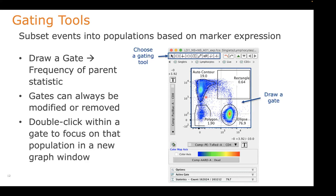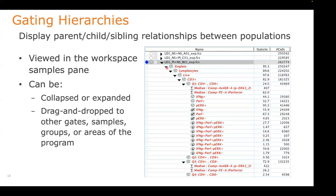Once you've drawn a gate, double-click on it and it'll open a new graph window showing just those events within the gate — that's how we construct the gating hierarchy. As you begin to build this hierarchy, you'll see arrows that you can expand or collapse, making navigation through your sample pane a little easier. A lot of the functionality in FlowJo uses drag and drop — so if you've drawn some gates, you can select them and apply them to other samples by drag and drop.